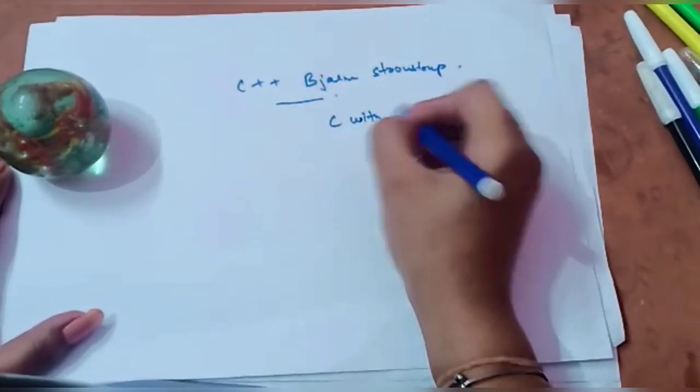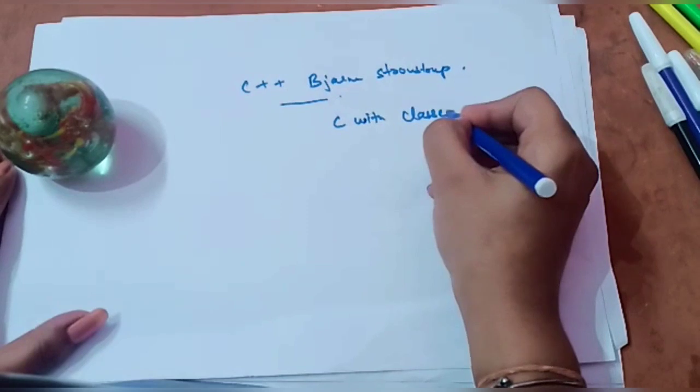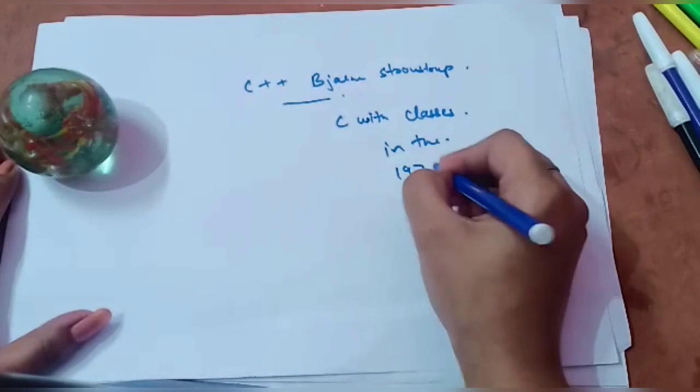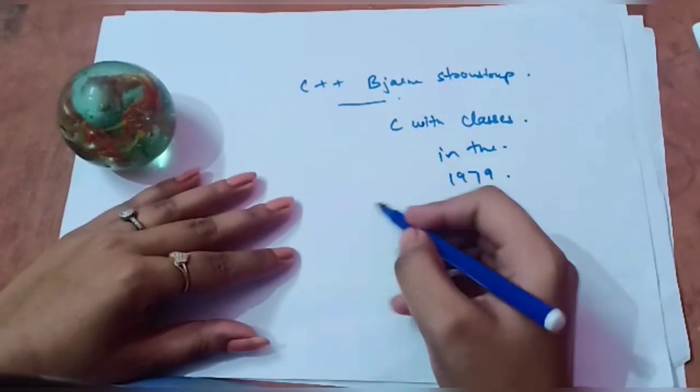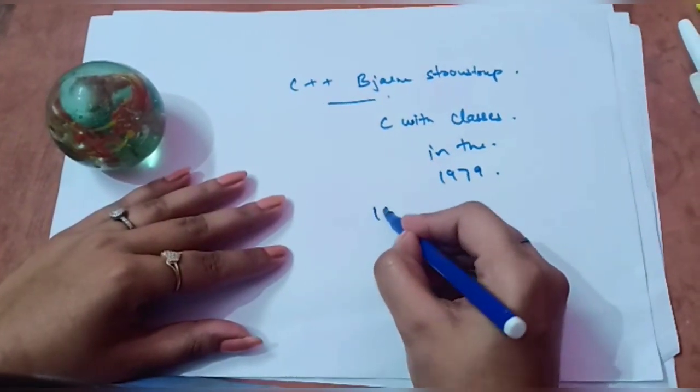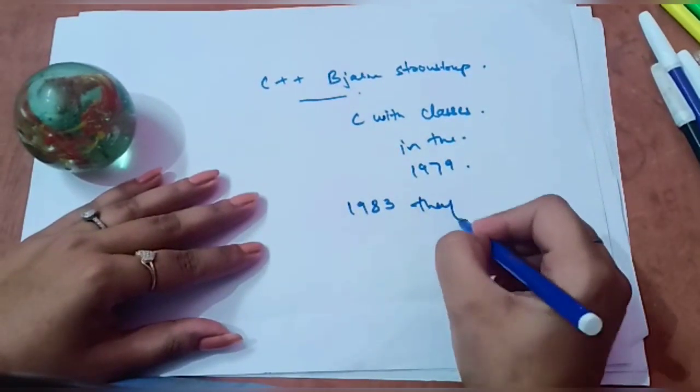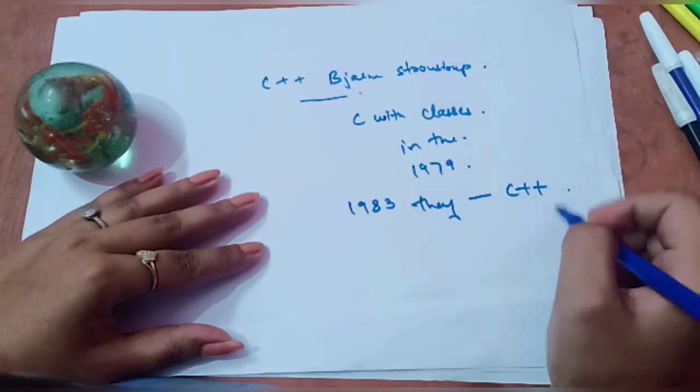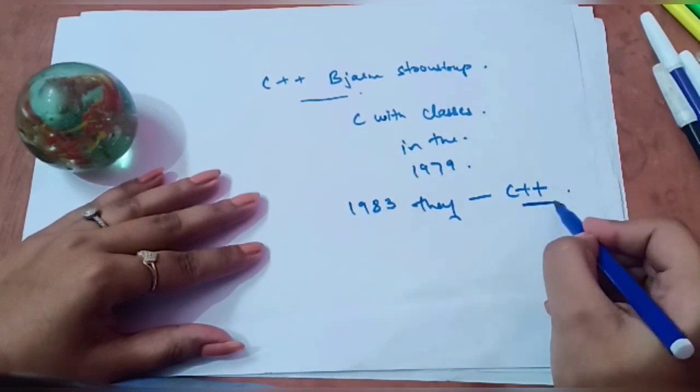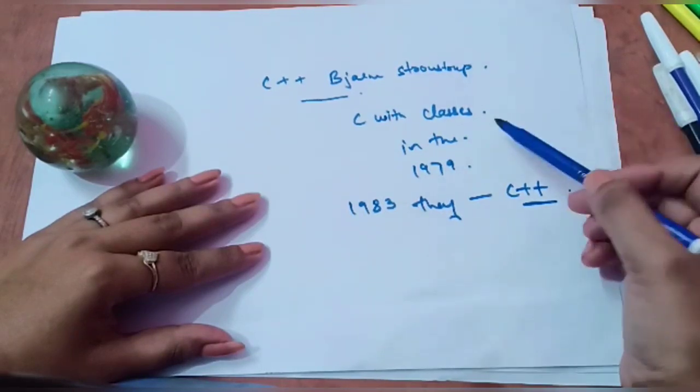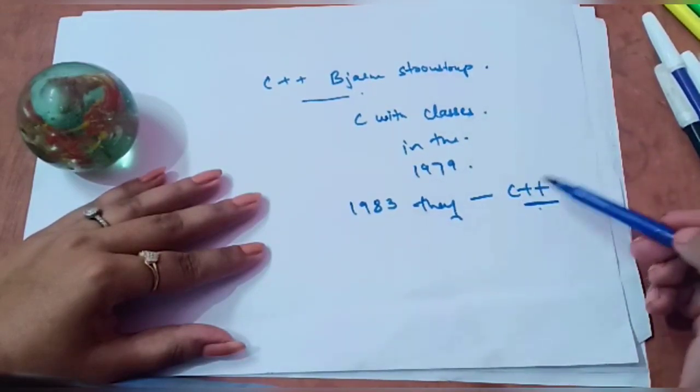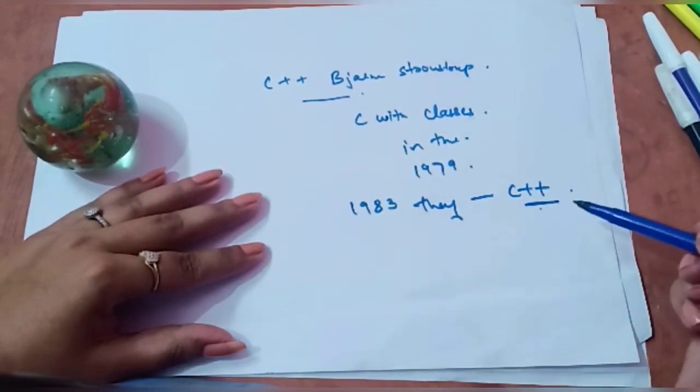In the year 1983, they renamed it as C++, where plus plus is the increment operator. Since it was incremented from C with classes to C++, it is the next step, so they named it as C++.